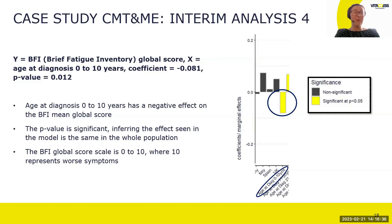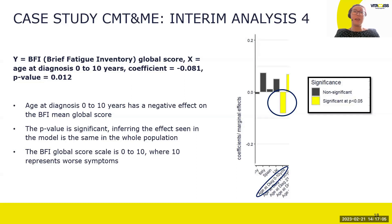Back to the CMT case study: the fourth interim analysis used regression modelling, which came out of the cross-sectional descriptive analyses from previous interim analyses and consultation with clinicians. This is an example of the BFI fatigue model. If the age of diagnosis was 0 to 10 years, it has a negative effect on the BFI mean global score — the scale is 0 to 10, where 10 represents worse symptoms. A negative coefficient means the BFI mean global score is shifted down, and the p-value is significant, suggesting the effect seen in the model reflects the real population.